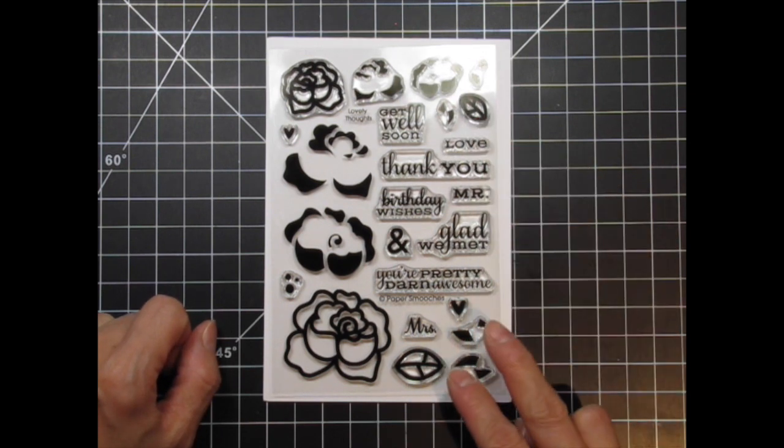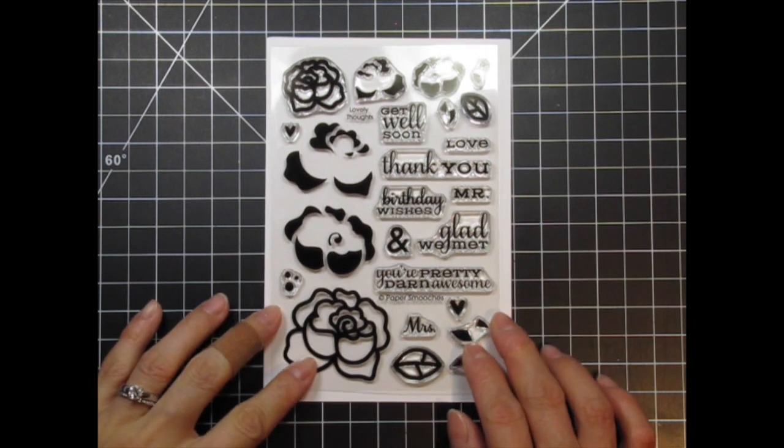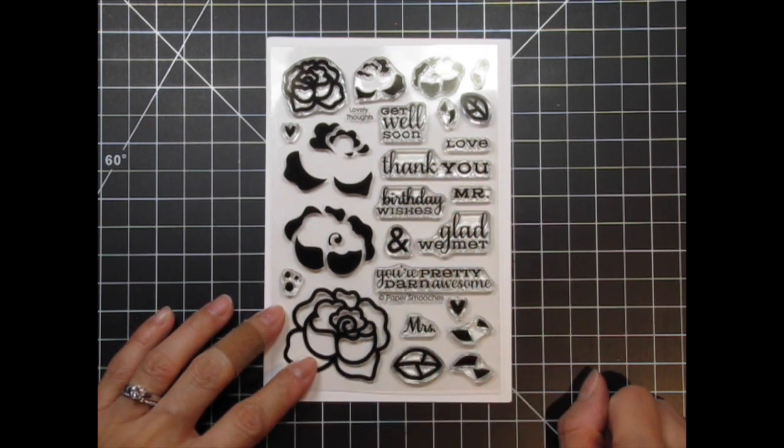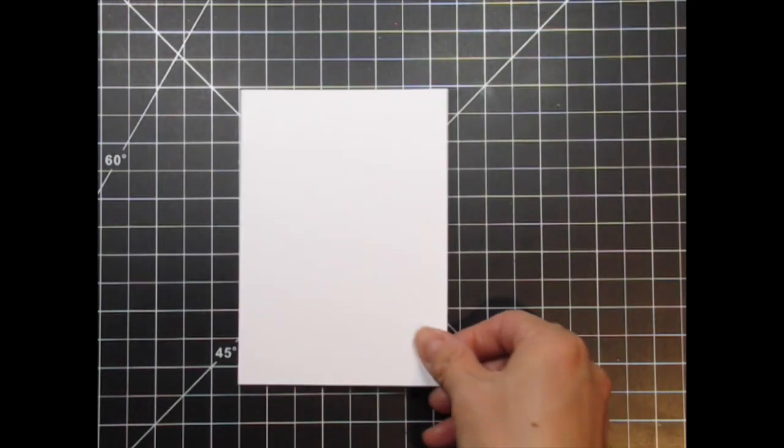I love the cute little hearts and dots that could be used as accents. Another thing I love about this stamp set is that there are so many sentiments to choose from and they cover a wide range of occasions. There is also an ampersand so you can combine the sentiments.